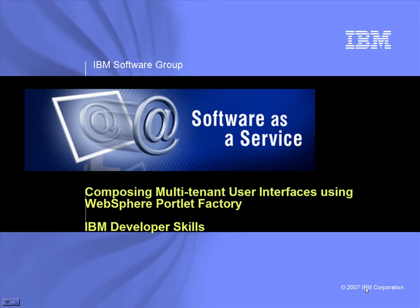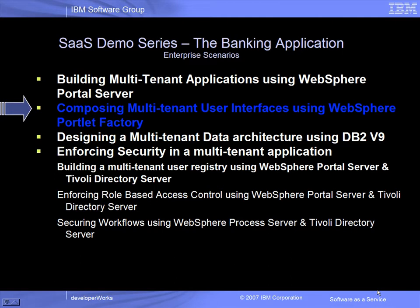Building a software-as-a-service solution requires addressing a few key technical challenges. In a set of recorded demonstrations, we will show how to address a number of these technical challenges through a set of architectural patterns exploiting key features in IBM middleware. In this series, there are seven demonstrations using the banking application that show how IBM middleware and configuration techniques can be used to solve key technical challenges for SaaS developers.